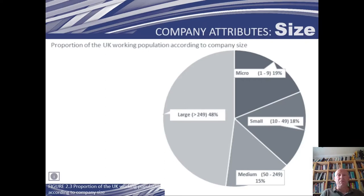Looking at different attributes of the organisation, from the opening vignette, one thing you will have noticed is that the number of employees or financial turnover varies immensely from organisation to organisation. We can see many organisations classified as large with more than 249 employees, quite a lot in the medium category between 50 and 250, and quite a few in the small and micro categories. The number of employees will affect the way we manage and will also affect many aspects of the POMC approach — the need to plan, organise, motivate and control poses different challenges depending on the size of the organisation.